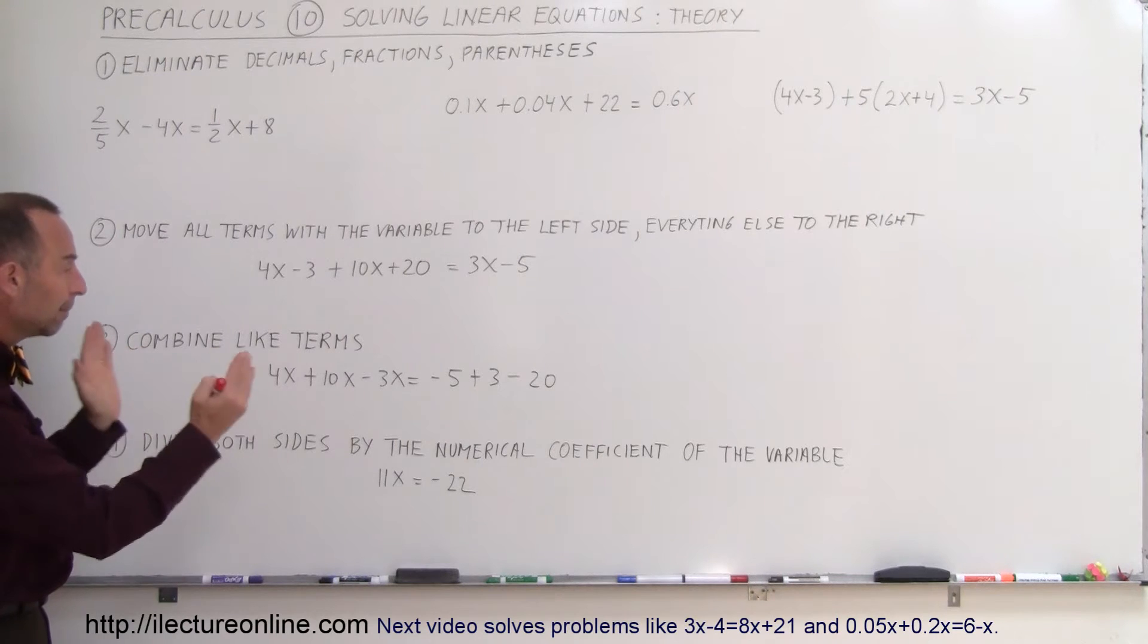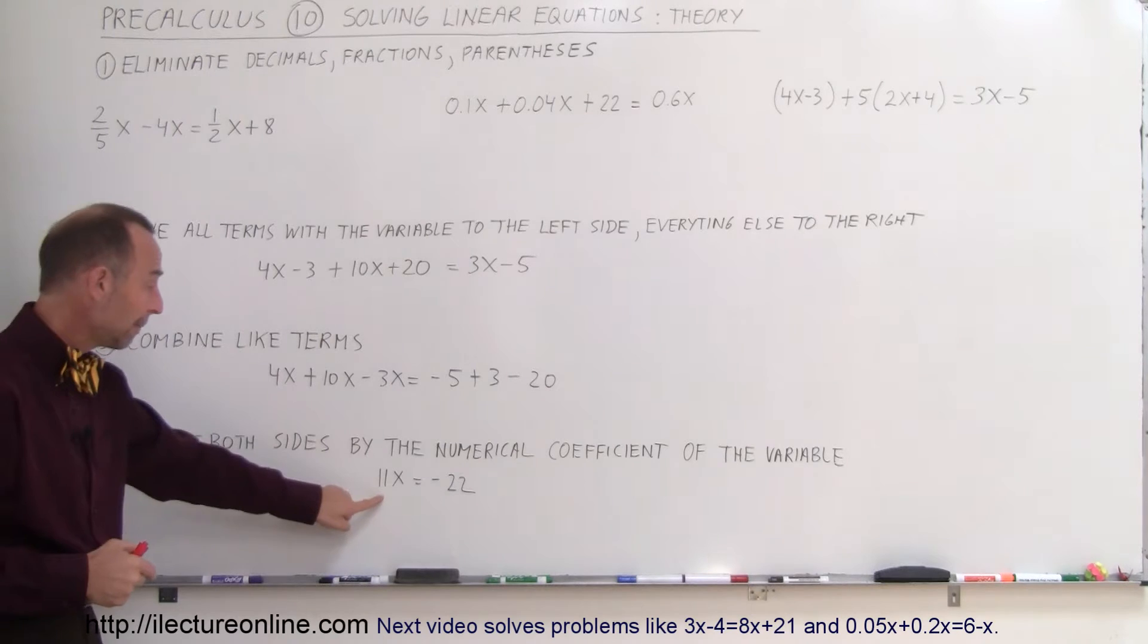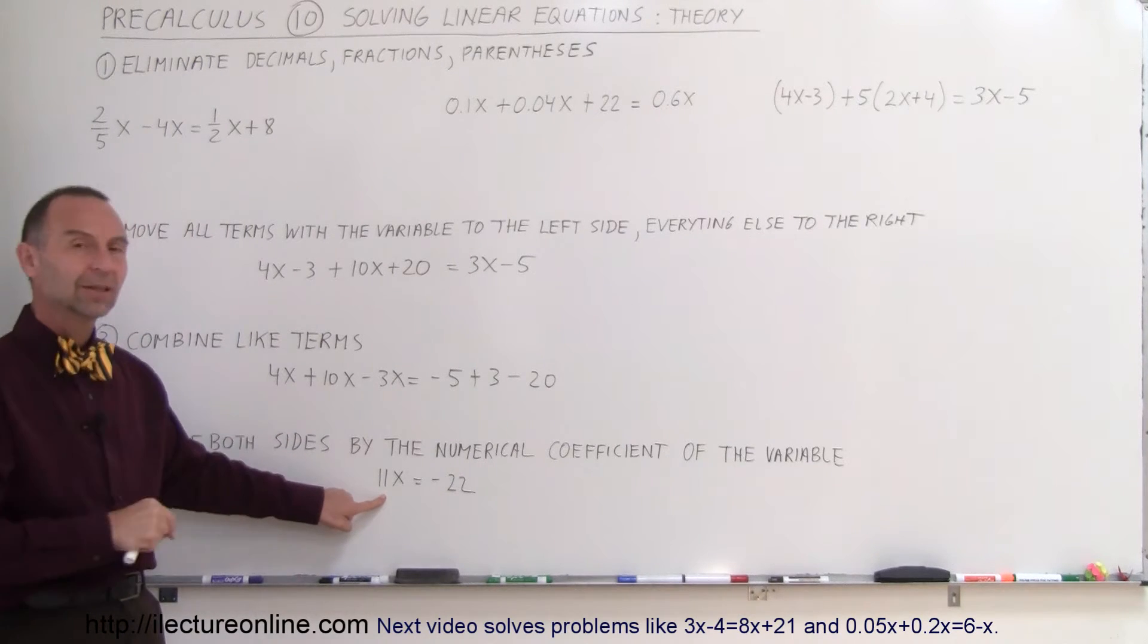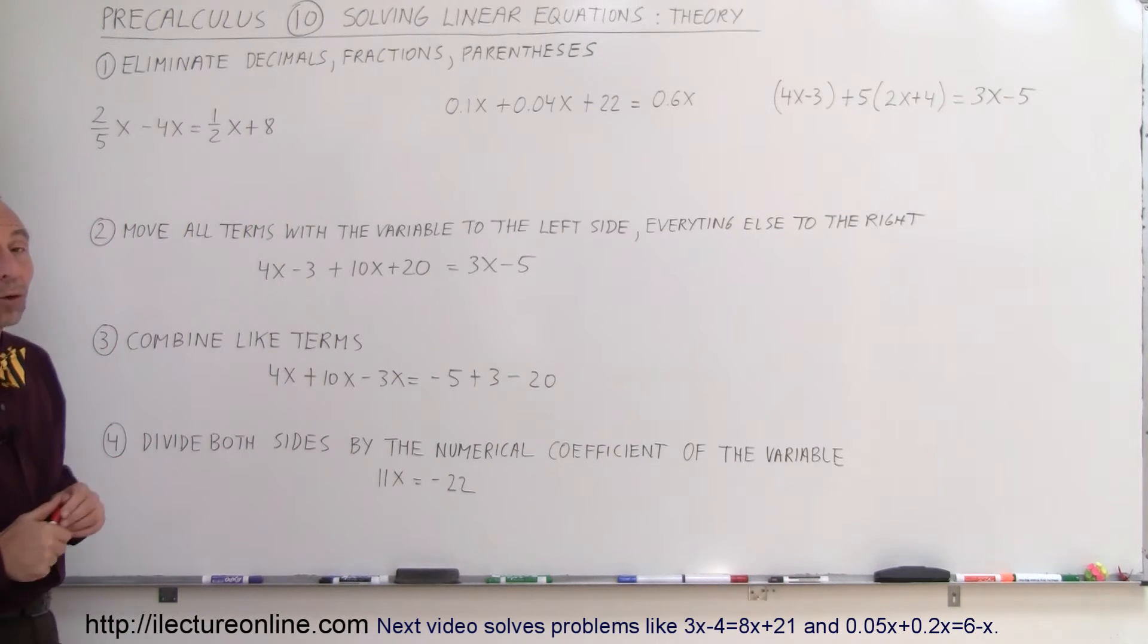Third, you want to combine like terms on both sides of the equation. And finally, fourth, you want to divide both sides of the equation by the numerical coefficient. That means the number in front of the variable. The numerical coefficient in front of the variable, you want to divide both sides of the equation by that number.